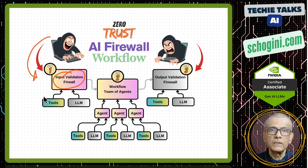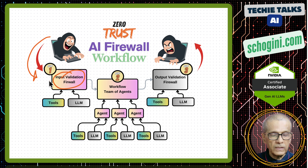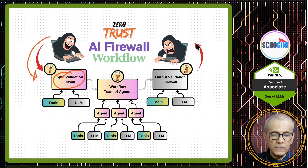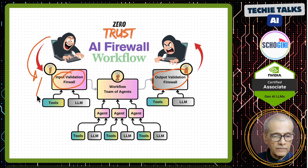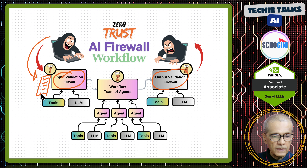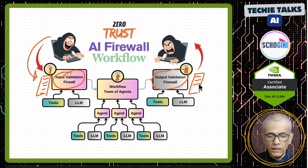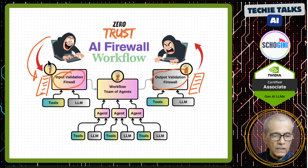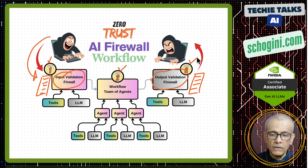So prompt injection and all kinds of tricks — they will attempt here. So our first validation should happen here. Then we have output validation. After processing the input, our output goes back to the hacker through the output validator. We will have our firewall prompt validating the input and also validating the output. The whole thing is agentic. Our chatbot is agentic, our input validation firewall is an agentic system, and output also is an agentic system.